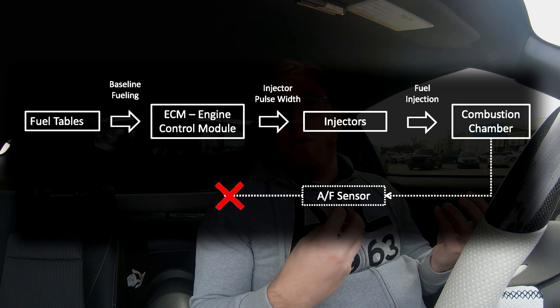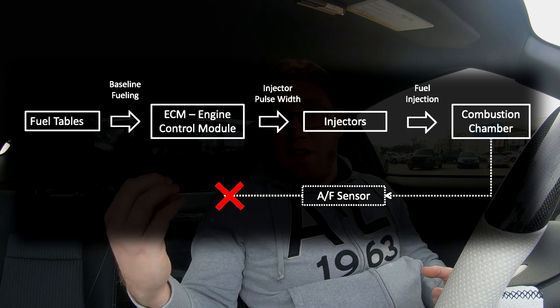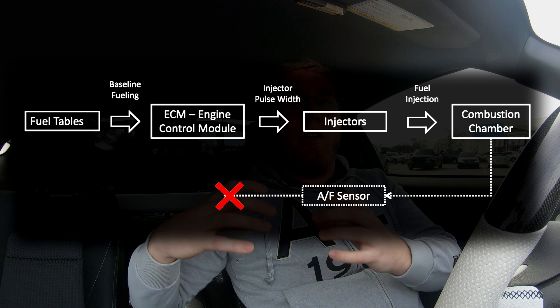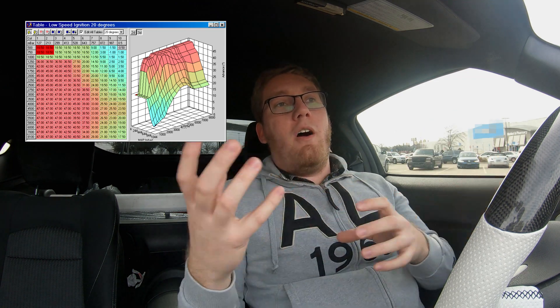Now let's talk about open loop operation. Open loop is when the car is no longer looking at inputs from some sensors — namely the AFR sensors — for feedback to determine how well combustion occurred. Instead, it simply tosses fuel into the engine based on the fuel tables, saying 'this is how much fuel you need' without caring what the AFRs look like. Short-term fuel trims become null, and the engine makes no short-term fueling adjustments based on AFR sensor data.